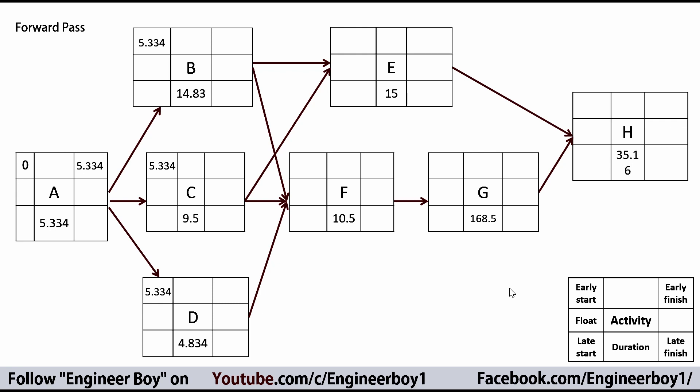Adding the duration of each activity to its early start gives the early finish. For activity F, which has three predecessors, we take the maximum early finish from B, C, and D. Activity D has the least time, activity C is medium, and activity B has the maximum — so the early finish of B, which is 20.163, is forwarded to F.